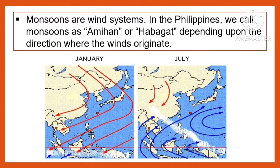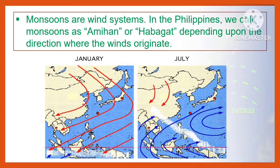Monsoons are a wind system. In the Philippines, we call monsoons as Amihan or Habagat, depending upon the direction where the winds originate.